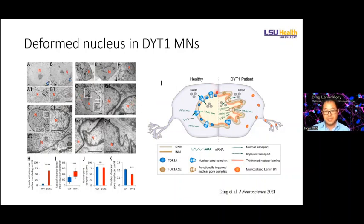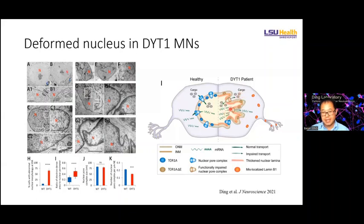Based on these findings, we propose a model for TOR1A and dystonia. In healthy neurons, nuclear transport is normal and mRNA is mainly exported to the cytoplasm for protein synthesis. But in disease, the nuclear lamina is disrupted and nuclear morphology is disrupted in diseased neurons. Transport for both protein and mRNA is disrupted, leading to accumulated mRNA inside the nucleus and protein mislocalization.